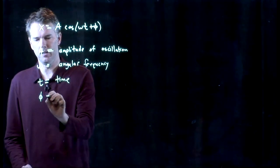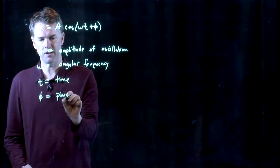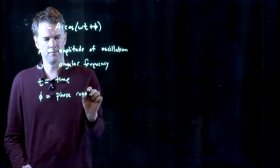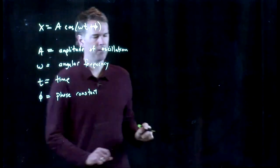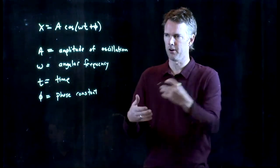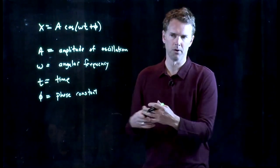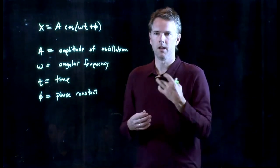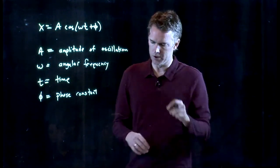And phi is what we call a phase constant. That's really just where do you start. Did you start at maximum amplitude? Did you start at x equals 0? Did you start somewhere in between? It has to do with where that oscillation started.